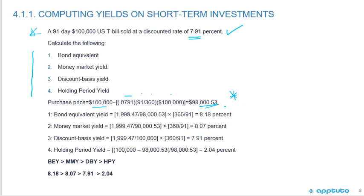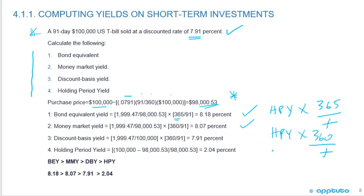The bond equivalent yield is the holding period yield times 365 over T. The money market yield is also the holding period yield but times 360 over T. Because 365 is greater than 360, the bond equivalent yield is greater than the money market yield — so 8.18% is greater than 8.07%.